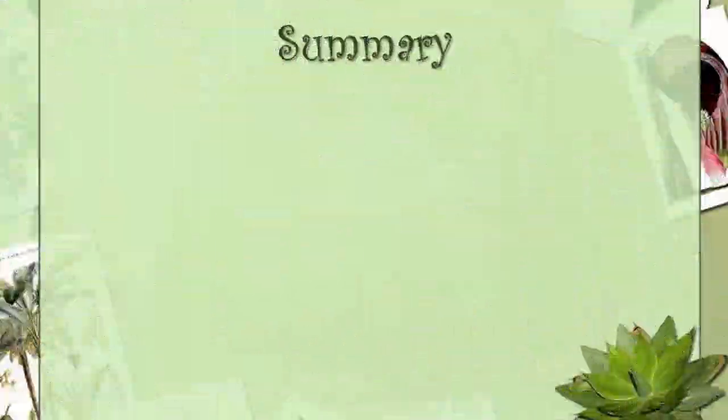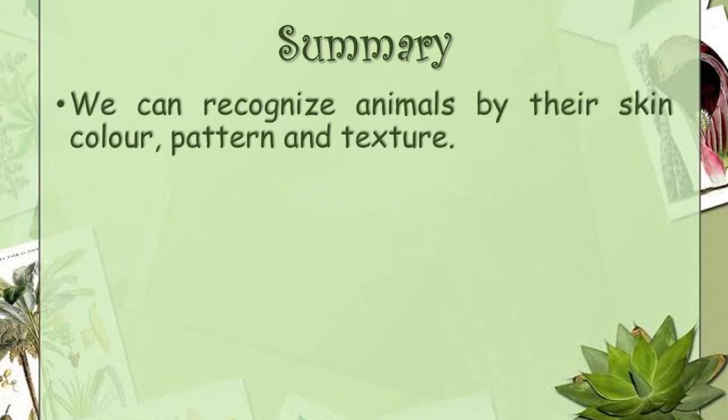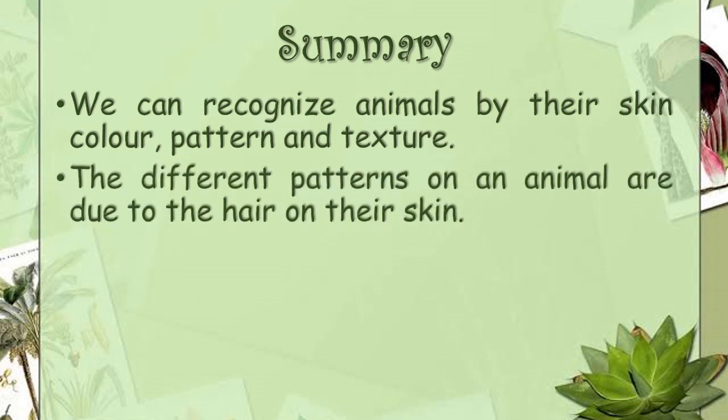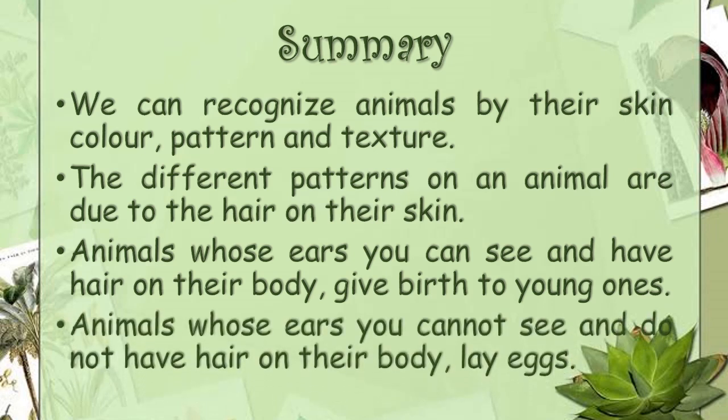Today we have learnt that we can recognise animals by their skin colour, pattern and texture. The different patterns on an animal are due to the hair on their skin. Animals whose ears you can see and have hair on their body give birth to young ones. Animals whose ears you cannot see and do not have hair on their body lay eggs.